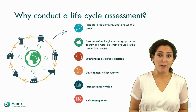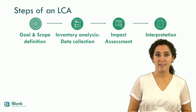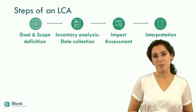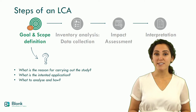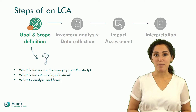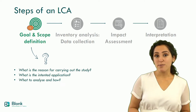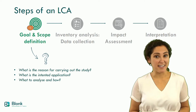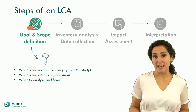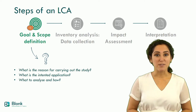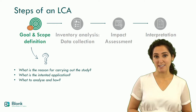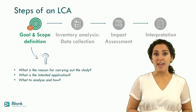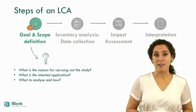So, how does an LCA work? There are four methodological steps in performing an LCA. The first step is defining the goal and the scope. In this step, you answer questions like: what is the reason for carrying out the study? What is the intended audience? What to analyze and how? This step is very important because it is where you identify the reason for performing an LCA, what you want to use it for, and what should be part of the system that you are evaluating.